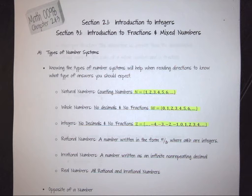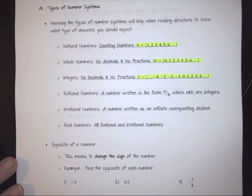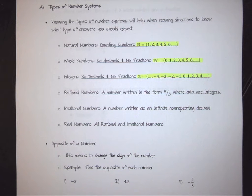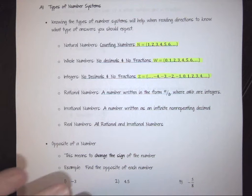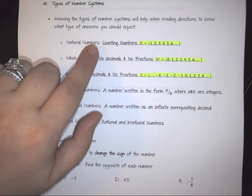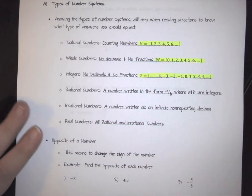Where you start is we need to look at the definitions of the different number systems that you actually have. There are a variety of different number systems that exist in mathematics, and some of those systems are shown here. You have to be able to know the difference between these systems and what is involved in them. First and foremost, we have natural numbers, which are called counting numbers.